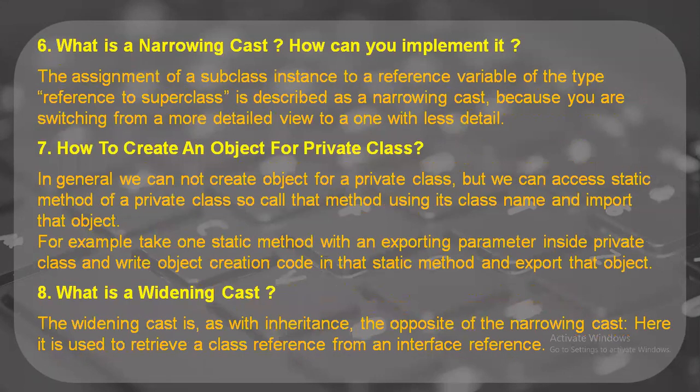What is a narrowing cast and how do you implement it? The assignment of a subclass instance to a reference variable of the type reference to superclass is described as a narrowing cast. You are basically switching from a more detailed view to a lesser detailed view — in layman's terms, you are hiding things by giving them a reference variable assigned to the superclass, thus narrowing your cast.